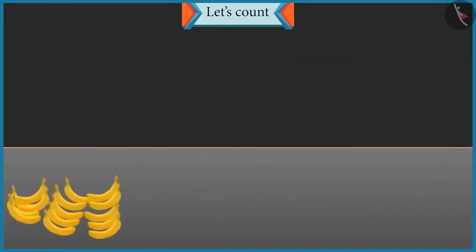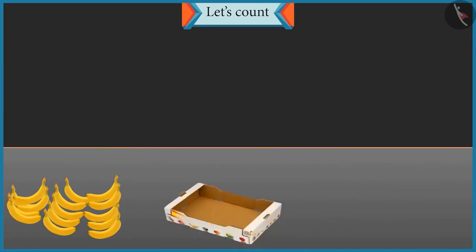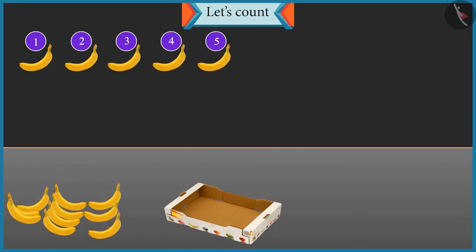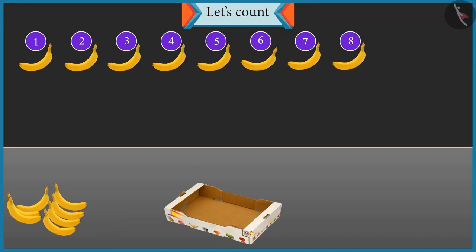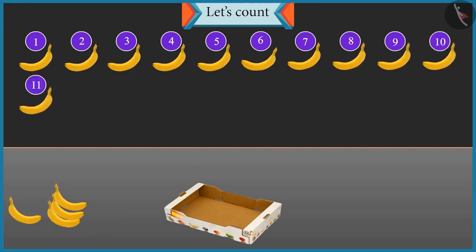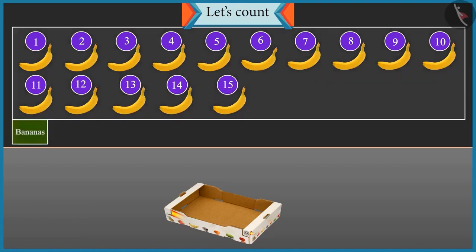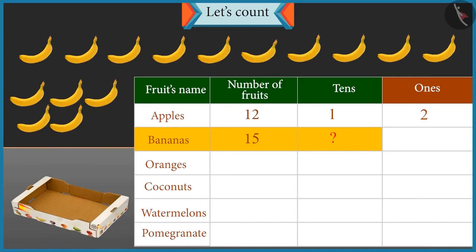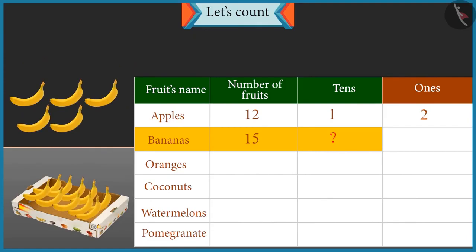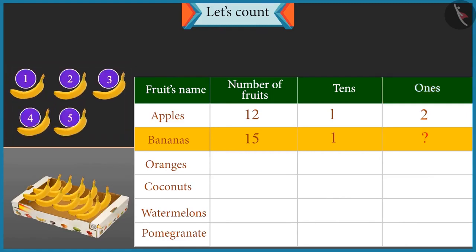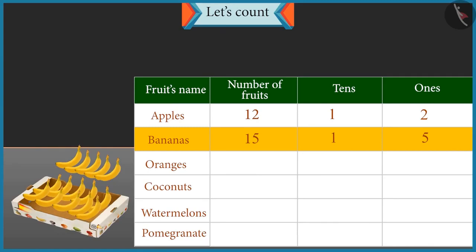Now count these bananas and place them in the second box. One, two, three, four, five, six, seven, eight, nine, ten, eleven, twelve, thirteen, fourteen and fifteen. There are fifteen bananas. How many tens are there in fifteen? A group of ten will be formed, so there is one ten in fifteen. And how many ones are there? There are five bananas left, so there are five ones. Well done, Chotu.